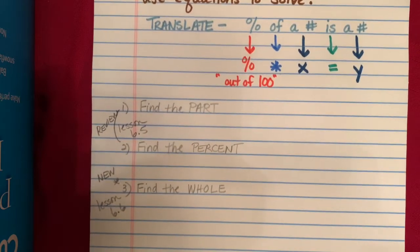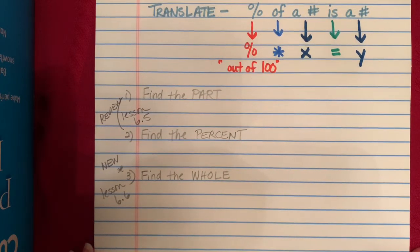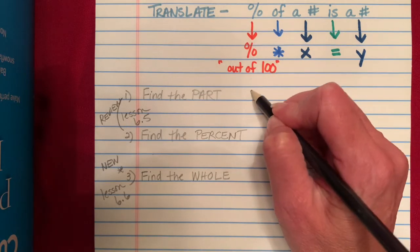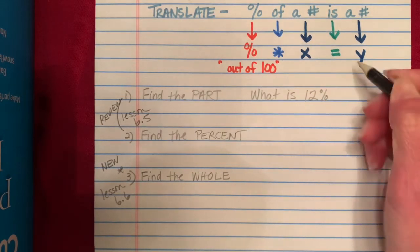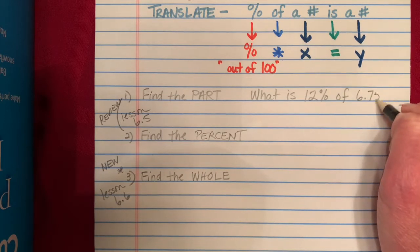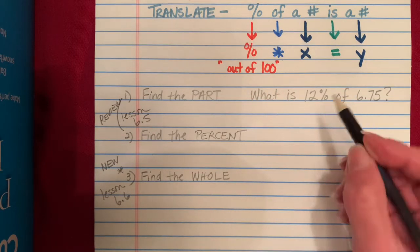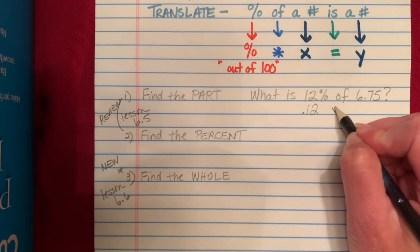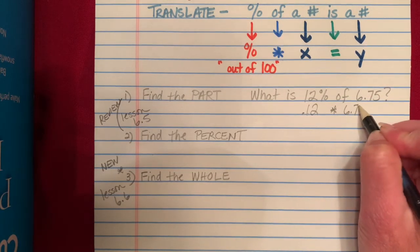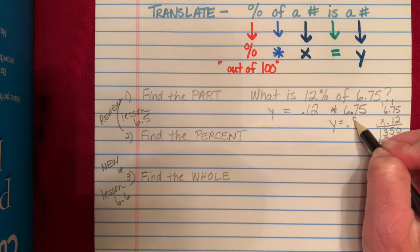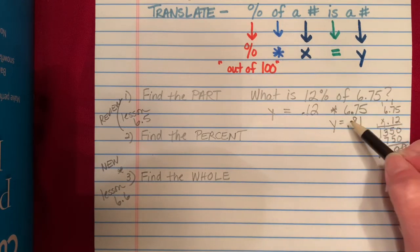Mrs. Carney reviewed with you finding the part and finding the percent from lesson 6-5. Finding the part would be an example like what is 12% of 6.75, where we're looking for the part. So we would change 12% to a decimal, 0.12, of to multiplication, and our number 6.75. We would multiply these to find our answer. So Y equals 0.12 times 6.75. We get 0.81. So 12% of 6.75 is 0.81.